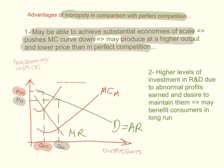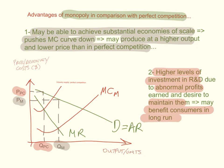A second advantage monopoly has over perfect competition is higher levels of investment in research and development, due to earning abnormal profits and the desire to maintain them. This level of investment in R&D will benefit consumers in the long run. These are two advantages that monopoly as a market structure may have over perfect competition.